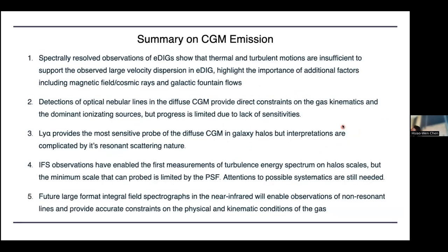To summarize the emission section: starting from the nearby universe, following extraplanar gas, we can get a direct picture of the circulation of baryons coming out of star-forming regions and out into the halo. We're slowly making progress in pinning down physical conditions based on direct emission. The additional information from morphology is tremendous. Looking into the future, large-format integral field units in the infrared are really valuable — I'm very much looking forward to HARMONI on the ELT in a few years.